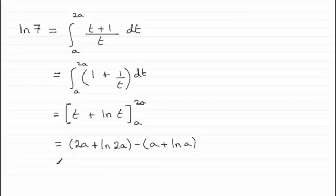And then cleaning this up, we're going to have 2a minus the a, which is going to leave us with a, and then you've got the natural log of 2a minus the natural log of a.